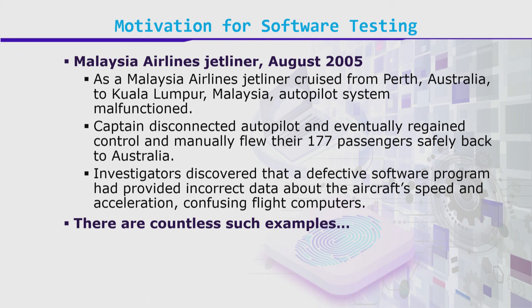A Malaysian Airlines jetliner cruising from Perth, Australia to Kuala Lumpur experienced autopilot failure and started malfunctioning at a particular altitude. Investigators discovered that a defective software program had provided incorrect data about the aircraft's speed and acceleration — it was confused.